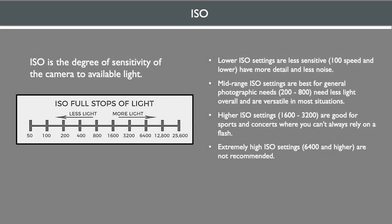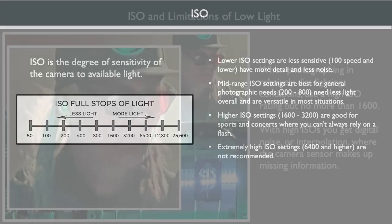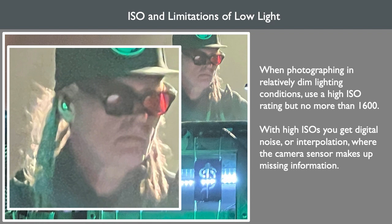ISO is the degree of sensitivity of the camera to available light, and is expressed in numbers. Lower ISO settings are less sensitive, have more detail, and less noise. Mid-range ISO settings are best for general photographic needs, require less light overall, and are versatile in most situations. Higher ISO settings are good for sports and concerts when you can't always rely on a flash. Extremely high ISO settings, such as 6400 and higher, are not recommended. When photographing in relatively dim lighting conditions, use a high ISO rating, but no more than 1600. With high ISOs, you get digital noise or interpolation, where the camera sensor makes up missing information. This gets even worse when zoomed in on a subject in low light.